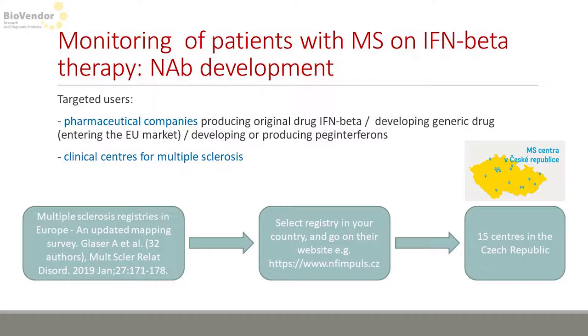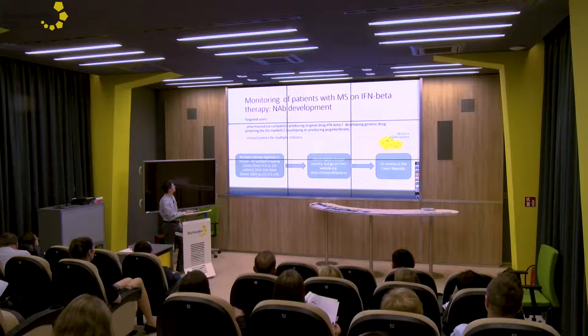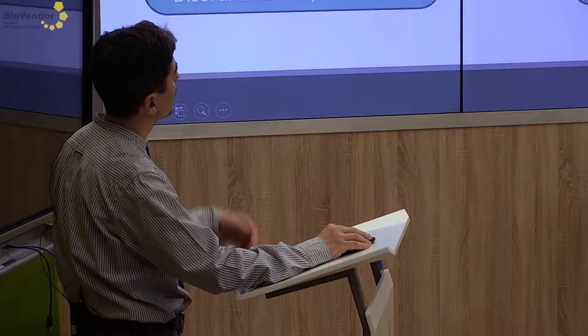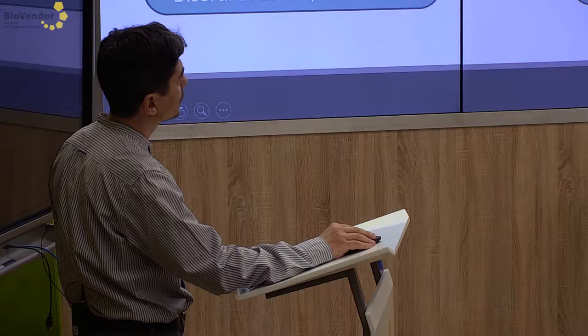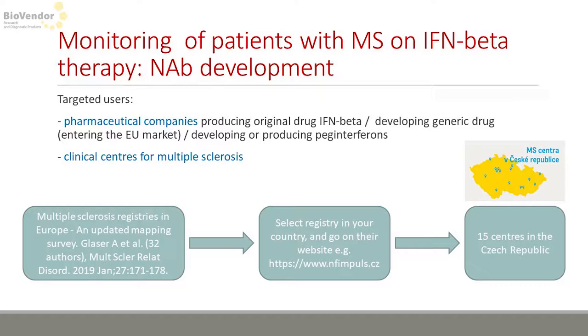Targeted users are therefore pharmaceutical companies producing interferon beta drugs, or clinical centers for multiple sclerosis. In January 2018, a publication described registries across the European Union. From the website of the Czech register, I found 15 centers for multiple sclerosis. We are going to contact and offer them our MXA kit for neutralizing antibody development control.